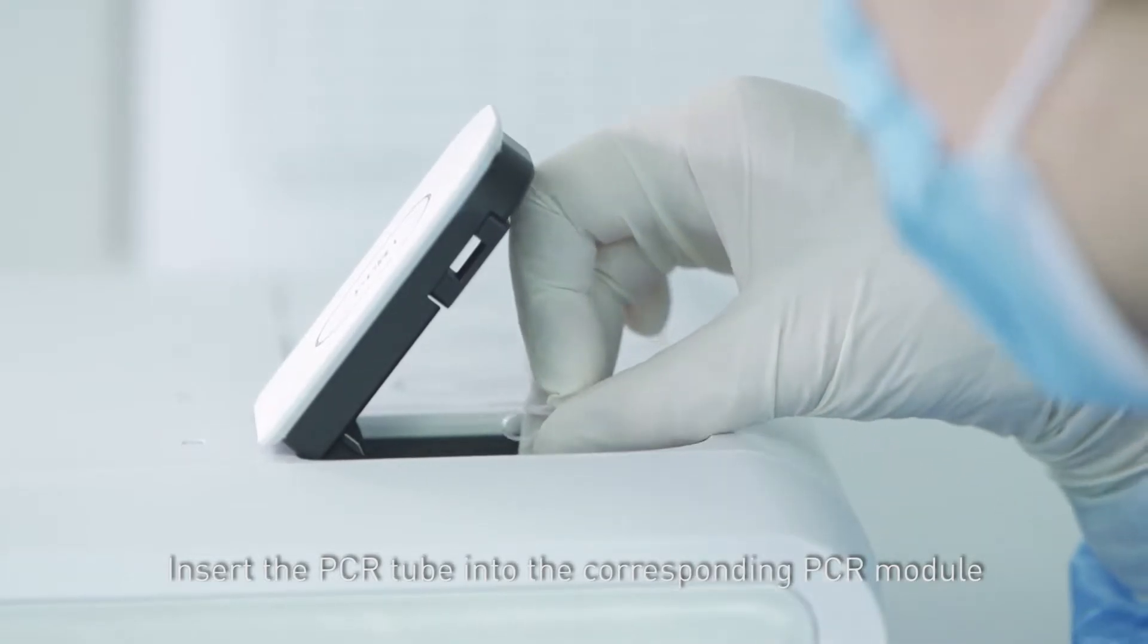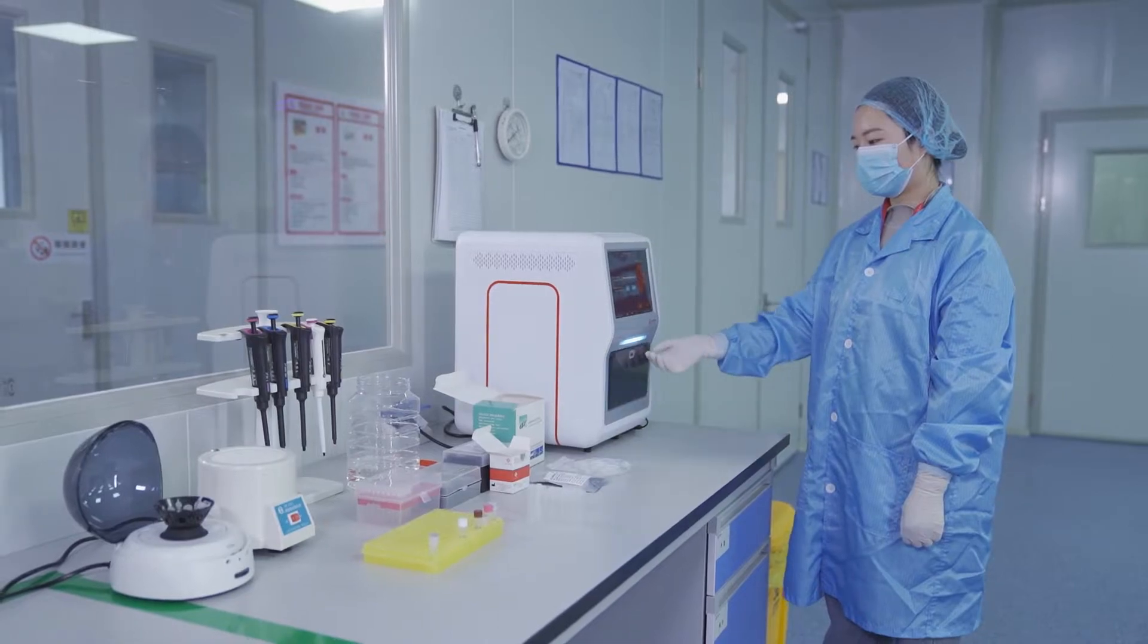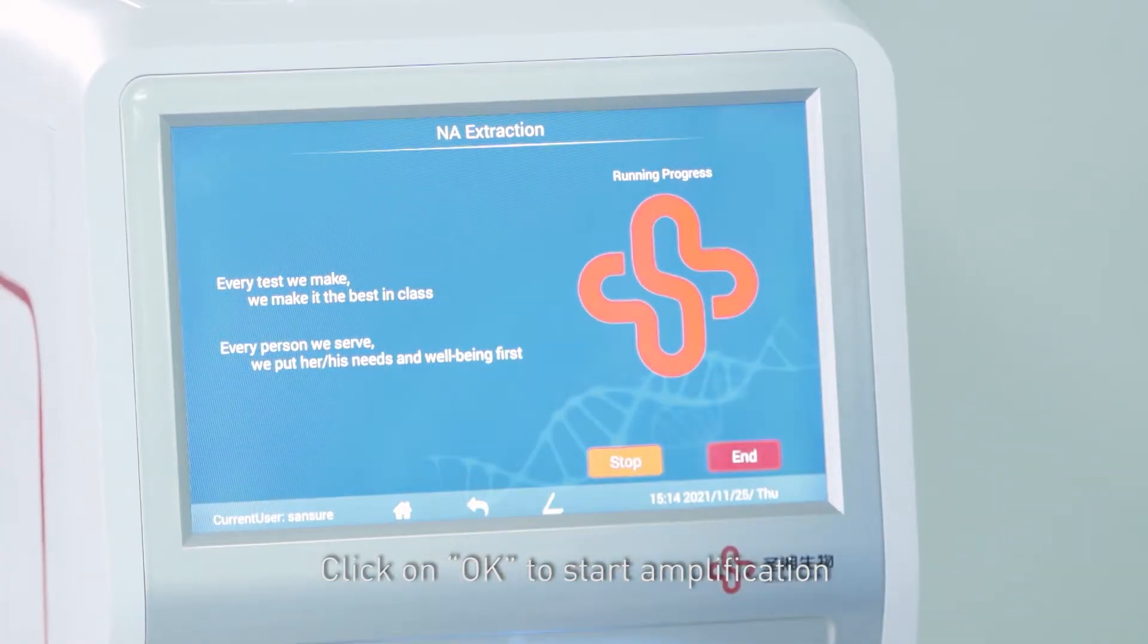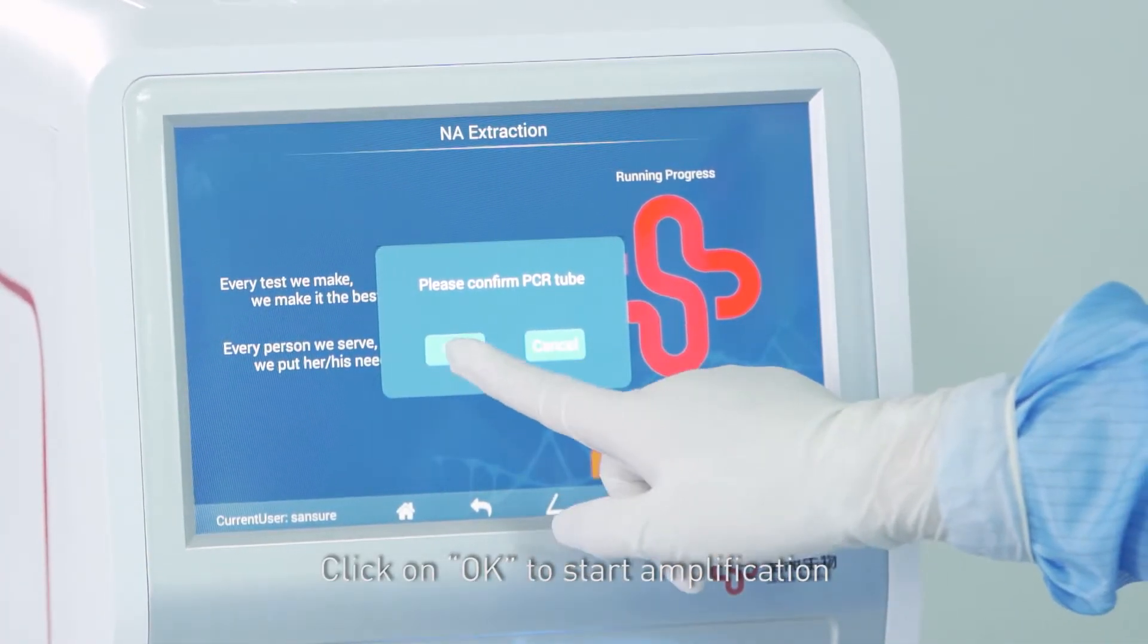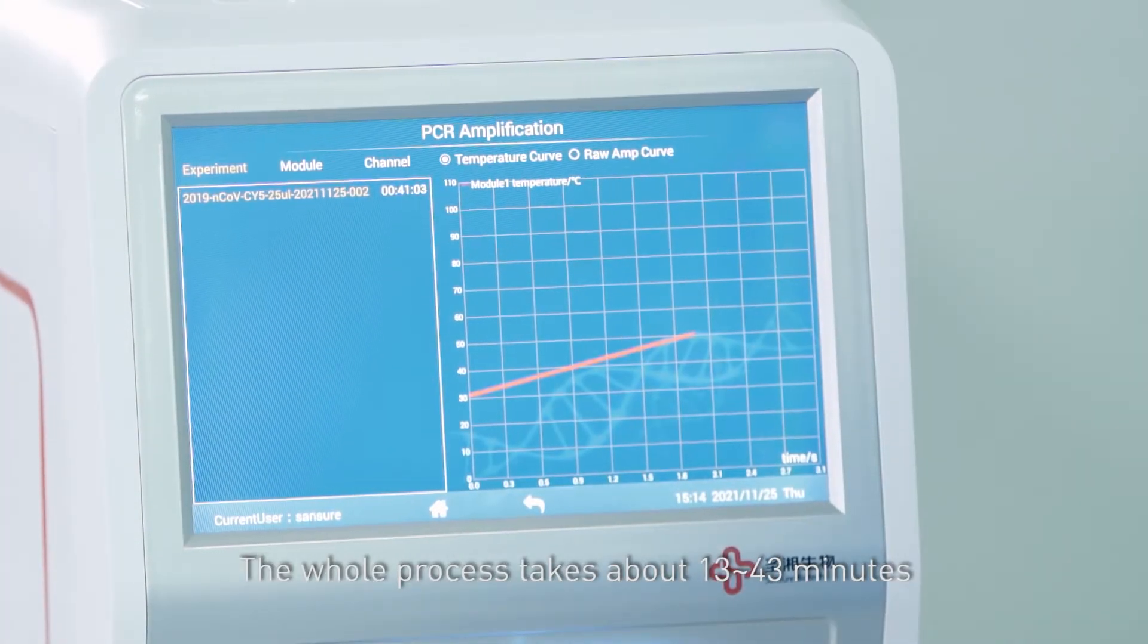Insert the PCR tube into the corresponding PCR module. Click on OK to start amplification. The whole process takes about 13 to 43 minutes.